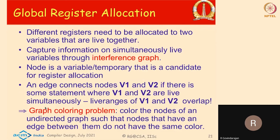The problem we want to solve is: given a graph of N nodes and some edges, color it so that two adjacent nodes do not have the same color, using minimum colors or within a given number of colors. This is the graph coloring problem, which has been studied extensively in graph theory. We have mapped the register allocation problem to the graph coloring problem, so we can use any heuristic solution from graph coloring to do register allocation.